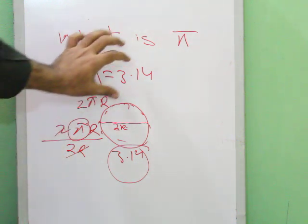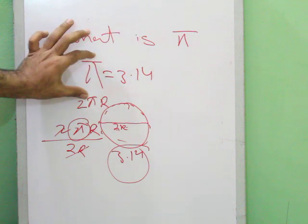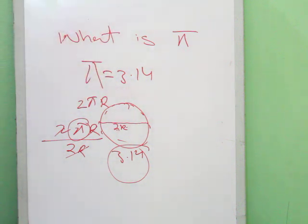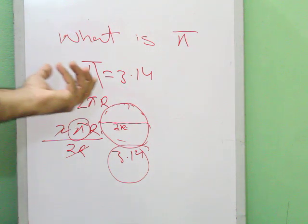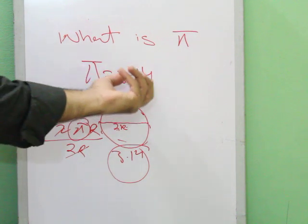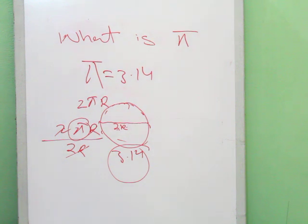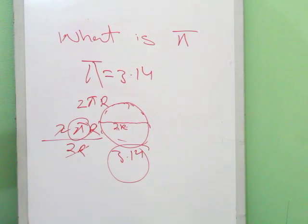So mathematicians decided to take this constant value and named it pi. That's why we use it everywhere, and it is equal to 3.14. I hope now you know why we take the pi value as 3.14. If you have any other questions regarding this, you may ask in the comments. Thanks for watching!